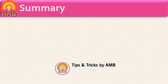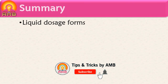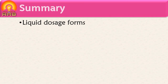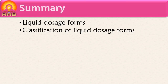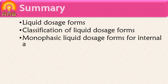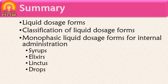To summarize today's session: first, we discussed the definition of liquid dosage forms — dosage forms which remain finally in liquid state. Then we discussed that liquid dosage forms are divided into monophasic and biphasic types. In this session we discussed various monophasic liquid dosage forms used for internal administration, including syrups, elixirs, linctus, drops, and draughts.